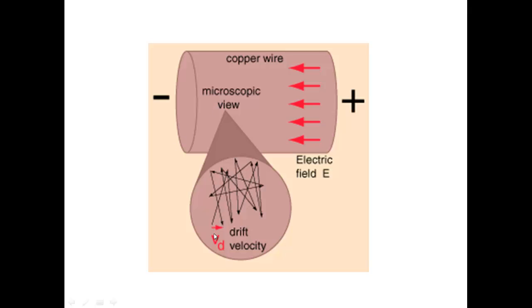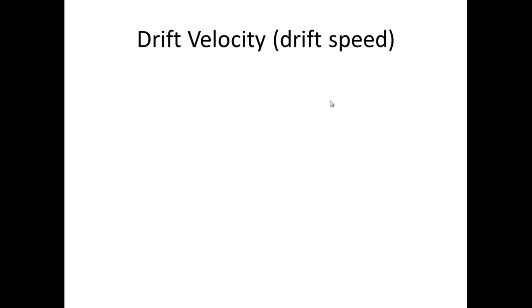Because their movement is actually quite fast but they bump into things and get deflected, so the progress is actually quite slow. So we have what's called the drift velocity, the average velocity that they have as they move through the wire due to the potential difference, and we have to look at a derivation of this.